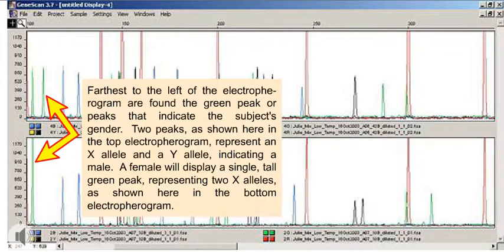Farthest to the left of the electropherogram are found the green peak, or peaks, that indicate the subject's gender. Two peaks, as shown here in the top electropherogram, represent an X allele and a Y allele, indicating a male. A female will display a single, tall green peak, representing two X alleles, as shown here in the bottom electropherogram.